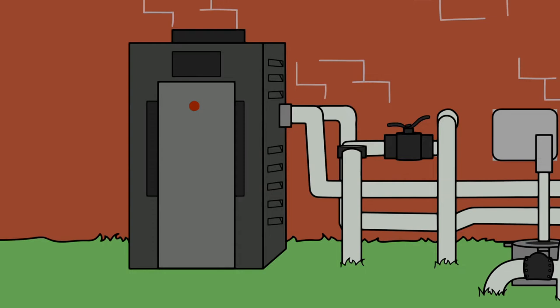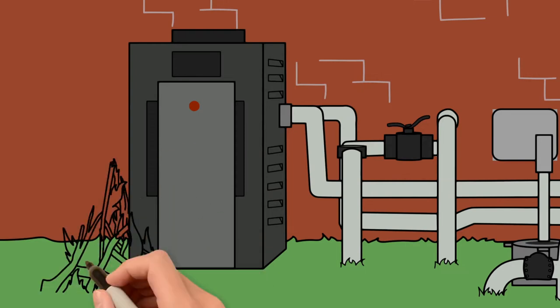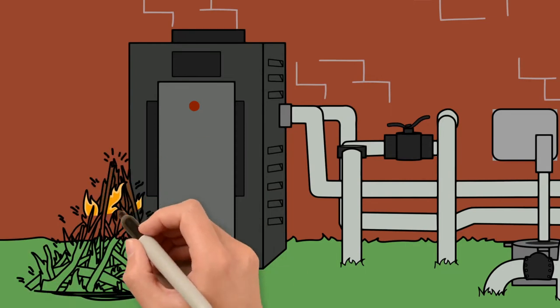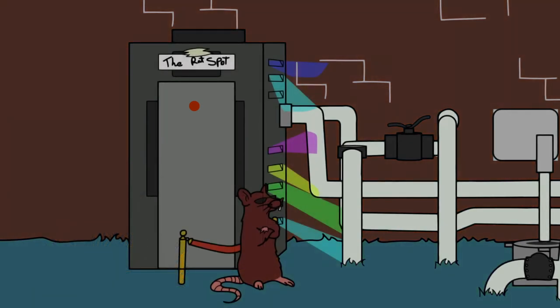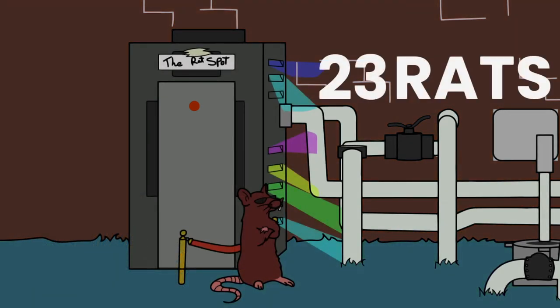So you killed Mickey and Minnie. They had like a full trash bag full of crap that they had moved in there and just turned it into a condo. So we counted 23 rats come out of that heater.